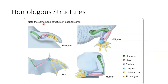Homologous structures show the same bone structure in each forelimb. Penguins have wings, alligators have legs and feet and toes. If you look at a penguin's bone structure in its wing, it actually has phalanges — like toes — the same as the alligator. The carpal, like your wrist, is present in the human, bat, penguin, and alligator. Even though we're very different organisms, we still have homologous structures. Your humerus — the upper arm bone — is present in humans, alligators, penguins, and bats. This indicates that a long time ago there was a common ancestor that vertebrates descended from.